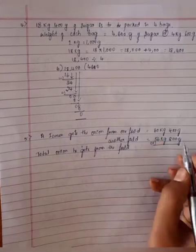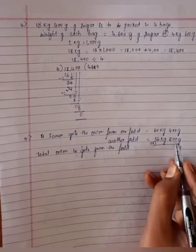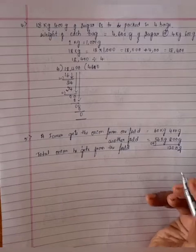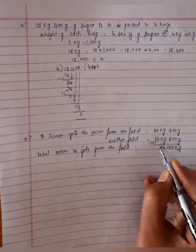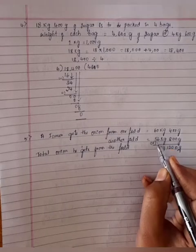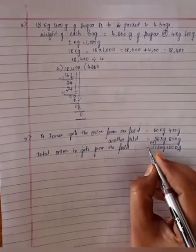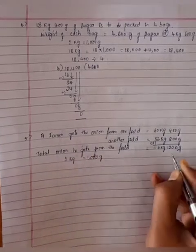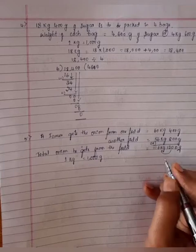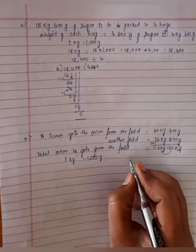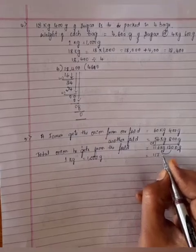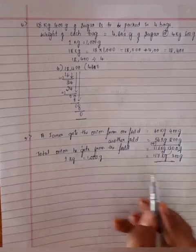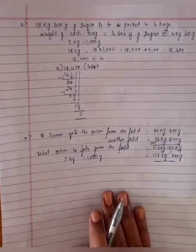Adding: 0 plus 0 is 0, 0 plus 0 is 0, 8 plus 4 is 12, 0 plus 6 is 6, 5 plus 6 is 11. You know that 1kg equals 1000g. Adding 1000g to 116kg, we get 117kg 200g. Total onion he gets: 117kg 200g.